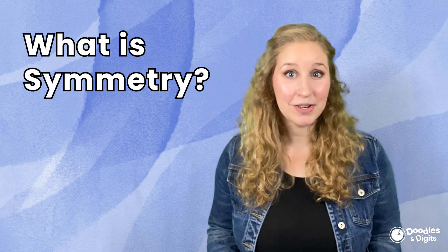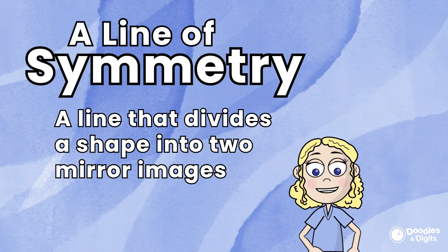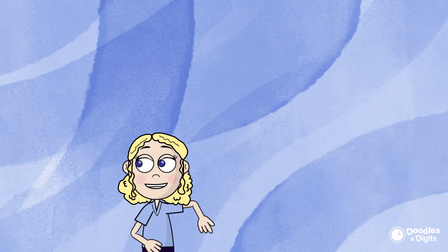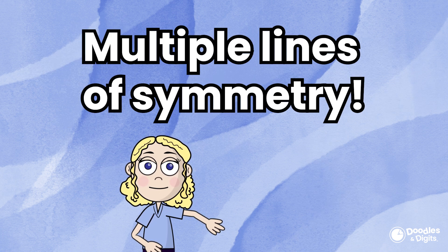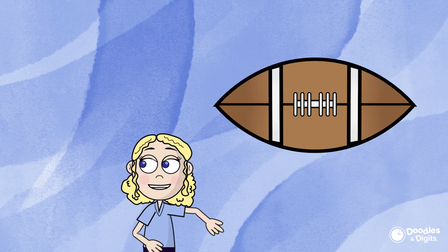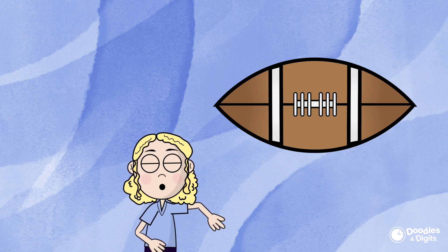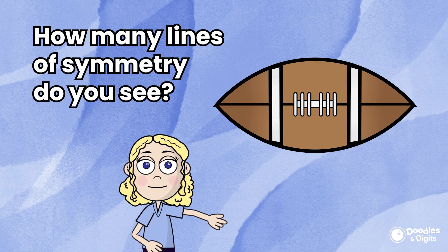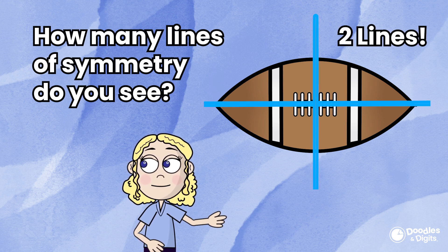So what is symmetry? A line of symmetry is a line that divides a shape into two mirror images. A shape can actually have multiple lines of symmetry. For example, let's look at this shape right here. How many lines of symmetry do you see? Could we fold this shape in half and it'll be a perfect match multiple different ways?